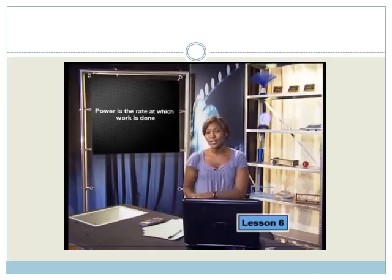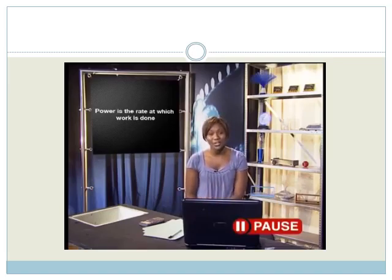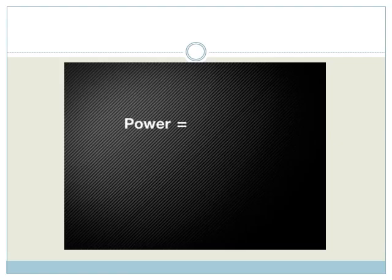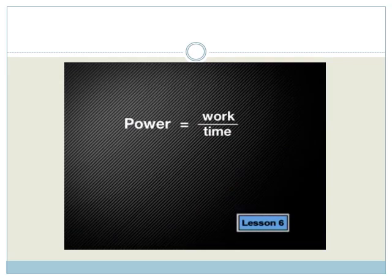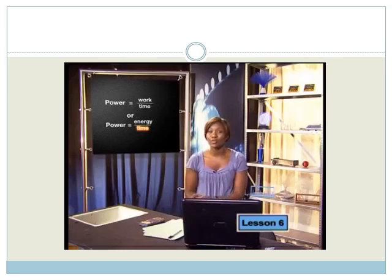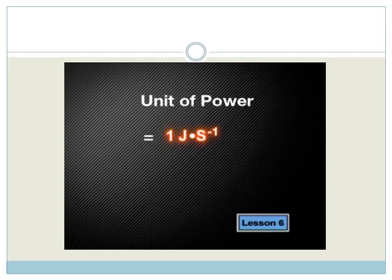Now, do you think the definition of work gives us any clues about how to calculate power? Well, if power is the rate at which work is done, it means that we need to take time into account. To calculate rate, we divide the work done by the time it takes to do the work. So power is represented mathematically as work done over time taken. Or we could also calculate power by dividing energy used by the time taken. Remember, the standard international unit of work is joule and for time we use seconds.